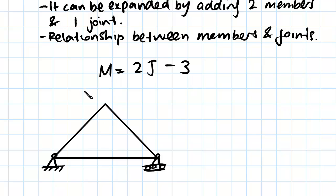If we substitute our values into this formula, we have one, two, three members. So we have three equals how many joints do we have? Joints are just the meeting of two or more members. So one, two, three joints. We have three times two minus three. So three equals three, so we have a simple truss.